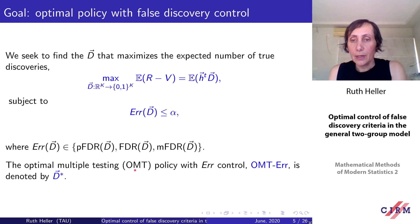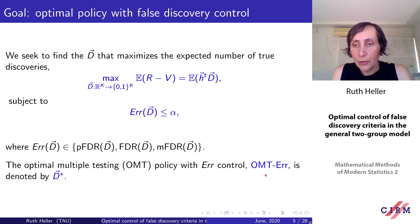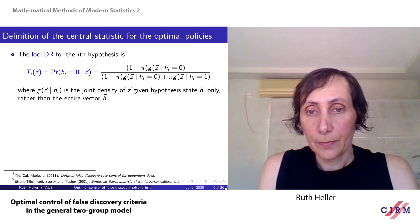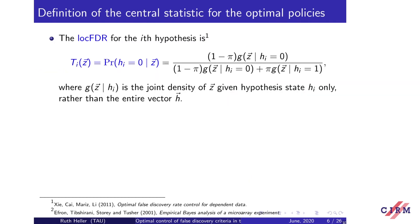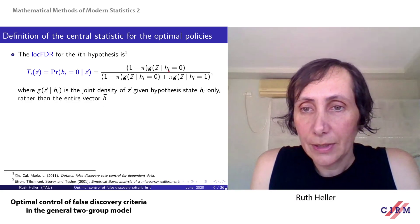The optimal multiple testing policy with a given error control is denoted OMT, with decision vector D star. For optimal policies, the central test statistic is the local FDR. Denoted T_i for the i-th hypothesis, the local FDR is a function of the entire observed test statistic vector Z, and it equals the probability of that hypothesis being null given the entire vector of test statistics. If we know the components of the general two-group model, we can easily express the local FDR in terms of those components.